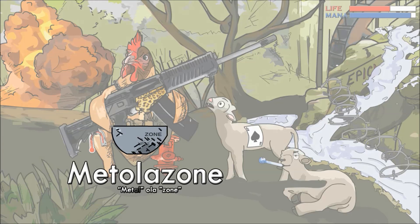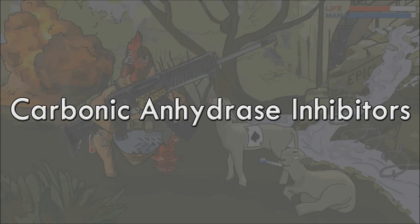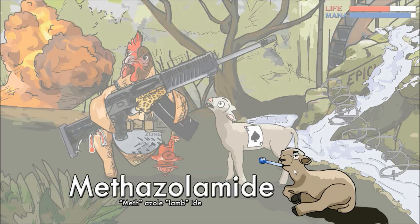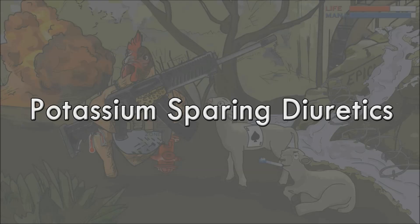The third category are the carbonic anhydrase inhibitors. Examples include acetazolamide and methazolamide, and these are represented by the lambs. Acetazolamide is the ace lamb. Methazolamide is the meth-smoking lamb. The fourth category are the potassium-sparing diuretics. Examples include spironolactone, eplerenone, and amiloride.